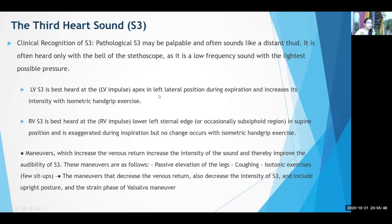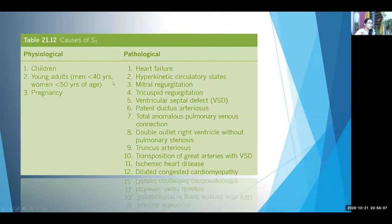When S3 originates from the LV, you hear it at the apex in the left lateral position during expiration. Right ventricular S3 is heard in the tricuspid area in the supine position and increases during inspiration. Causes of S3: physiological causes are children, young adults, and pregnancy. Pathological causes — number one is heart failure, then mitral regurgitation leading to LV S3, tricuspid regurgitation leading to RV S3, PDA giving LV S3, VSD giving LV S3, and dilated cardiomyopathy.